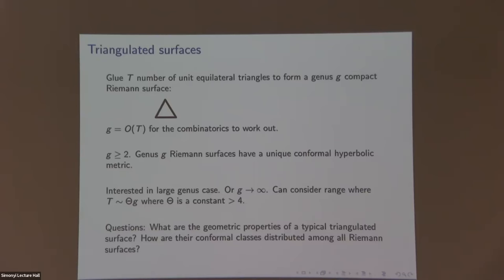We're interested in the following question: as the genus tends to infinity and the number of triangles t also tends to infinity proportionally to g, if you sample a triangulated surface with t triangles of genus g and look at the hyperbolic metric on it, what are the geometric properties? For instance, what is the expected diameter? And this leads to the next question: where are the triangulated surfaces distributed in moduli space of Riemann surfaces?